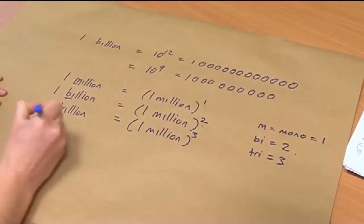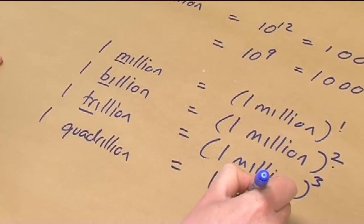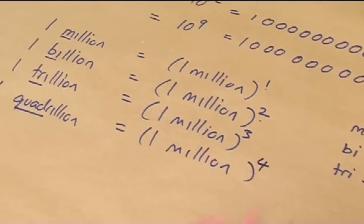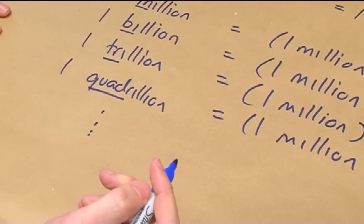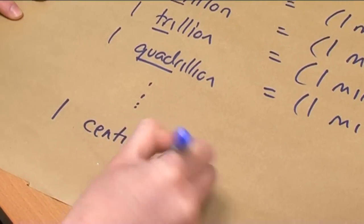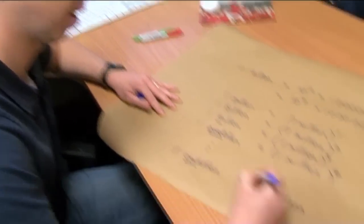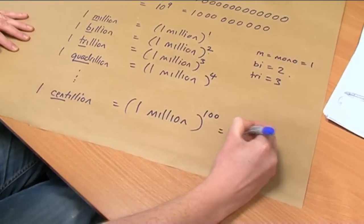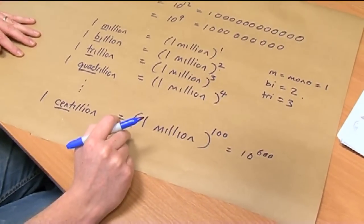You can carry on like this: a quadrillion — 1 million to the power 4. Let's go right the way up. What's a centillion according to this logic? Well, 'cent' means 100, so that's 1 million to the power of 100, which is 10 to the 600. That's incidentally bigger than a googol.